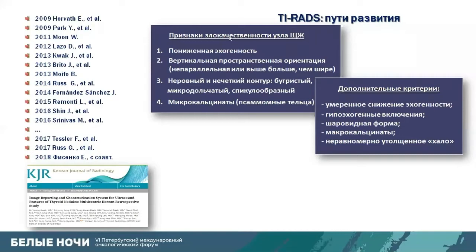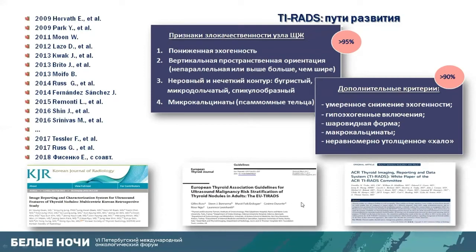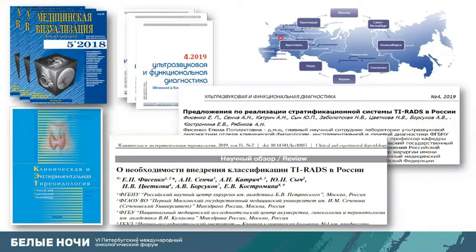The next stage of research showed that we must be guided not only by major attributes — those with specificities above 95% — but also by additional criteria with specificity over 90%. These include moderate reduction in echogenicity, hyper-echogenic inclusions, round shape, and macrocalcifications. In 2017, two classifications were published: the Unified European Thyroid Association Guidelines and the updated American Thyroid Imaging Classification, both incorporating these additional minor attributes.